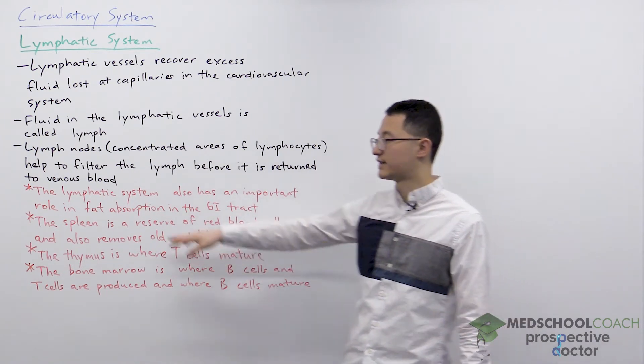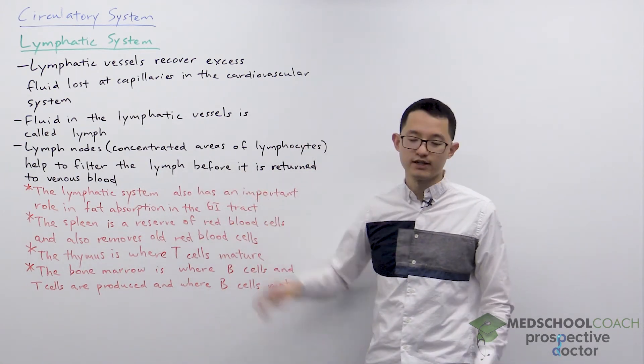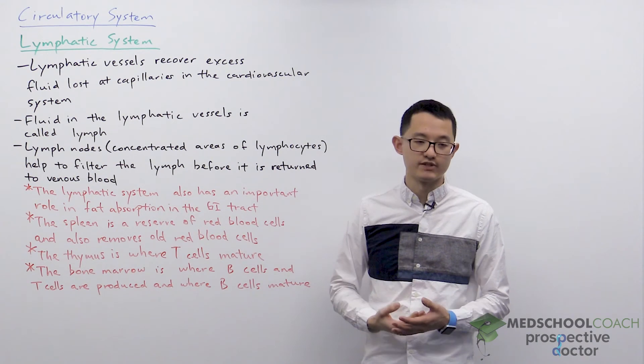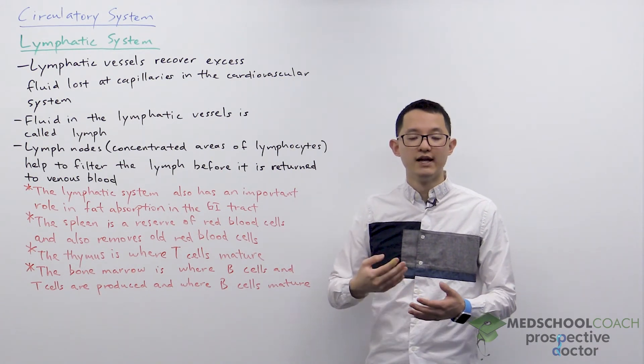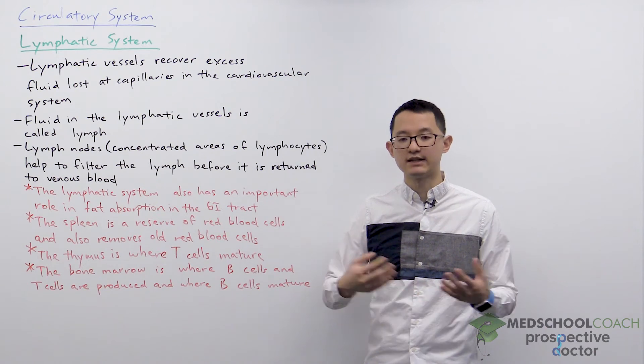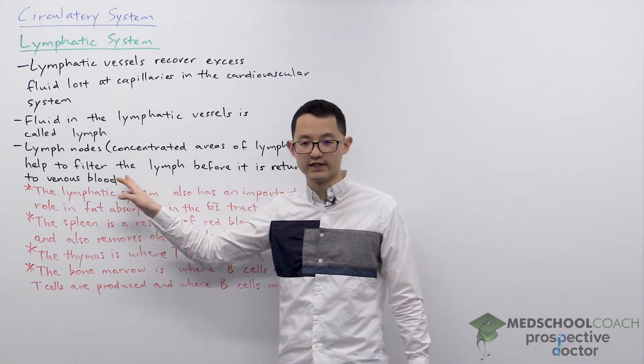In the lymphatic system there are these lymph nodes all over the body, and these lymph nodes are essentially concentrated areas of lymphocytes that are part of the immune system. These lymph nodes will help to filter the lymph and clear the pathogens so that it can be returned back into venous blood.